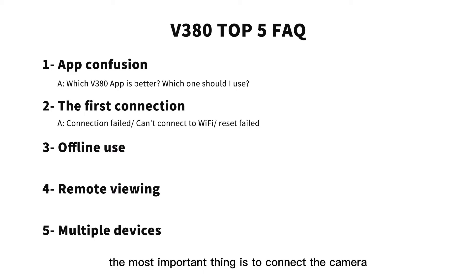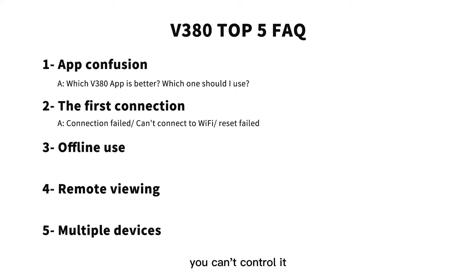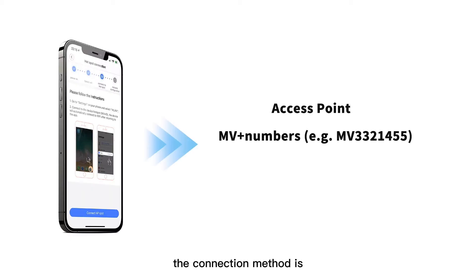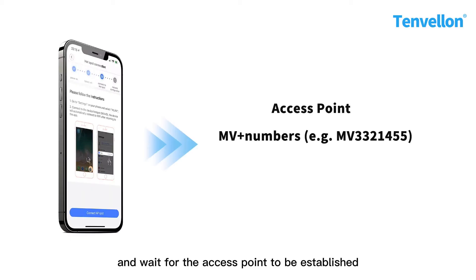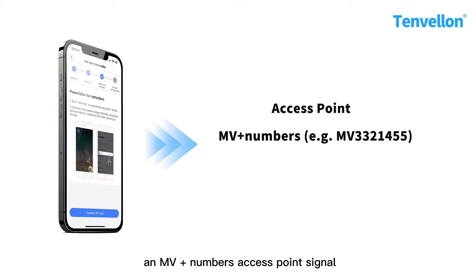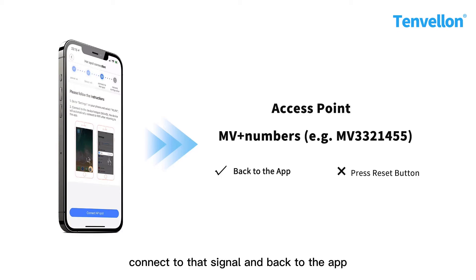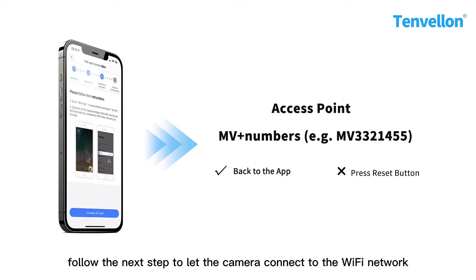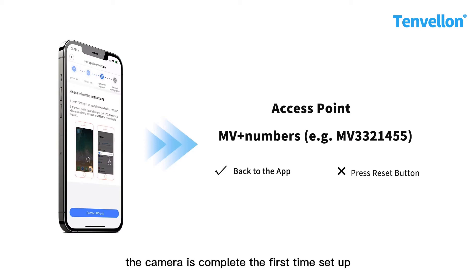The second question is first-time connections. When using the camera for the first time, the most important thing is to connect the camera — if you can't connect, you can't control it. The connection method is basically to start the camera, wait for the access point to be established, then go to the phone's network settings to find an 'MV' numbered access point signal, connect to it, and go back to the app.